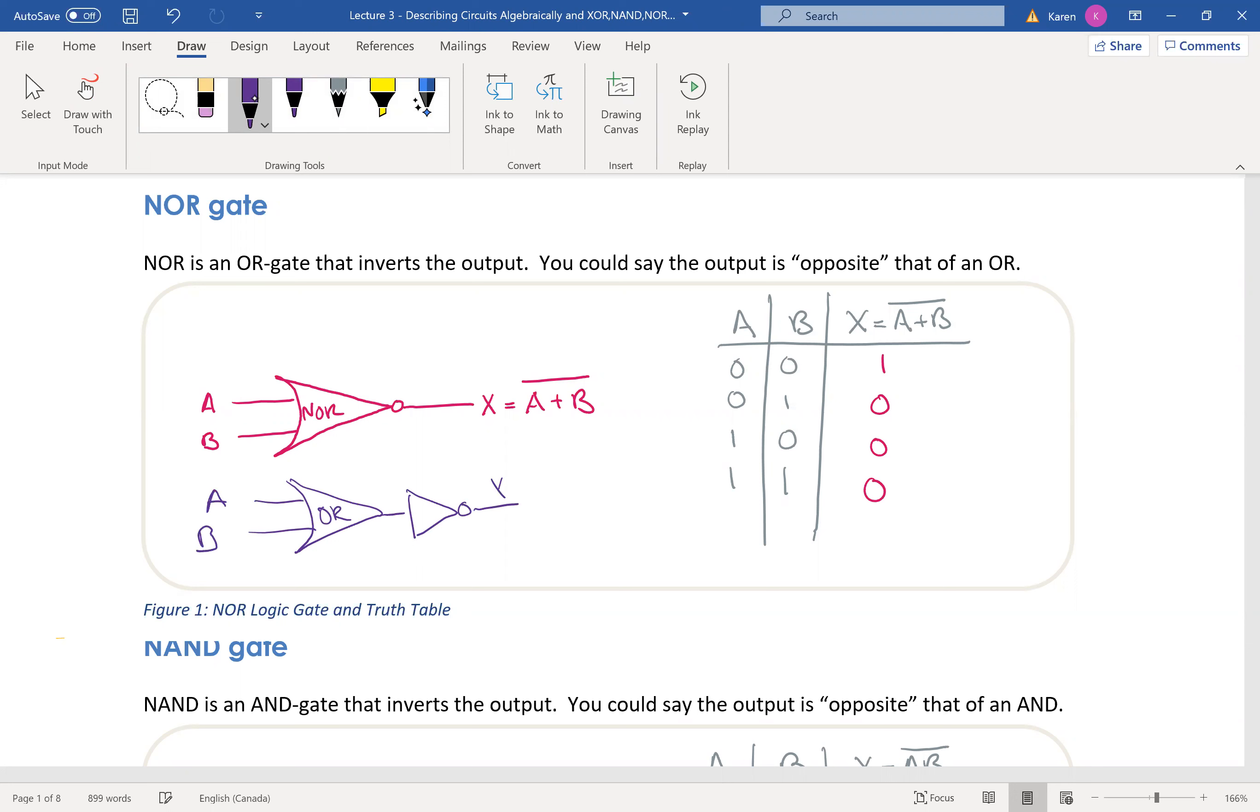A, B, and the output is A or B, and then the output is inverted. Because the output right here was A or B. The truth table for it is kind of like the opposite of an OR gate.